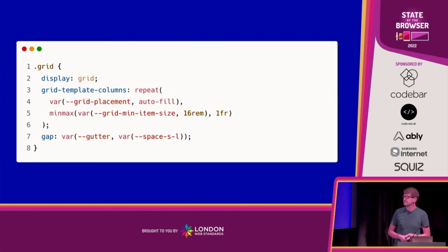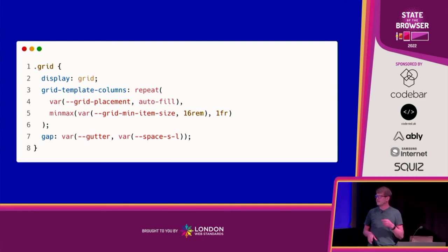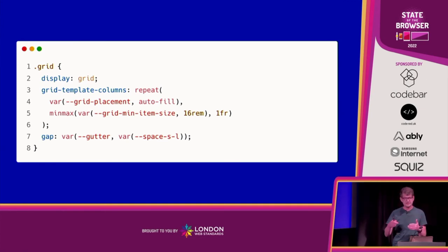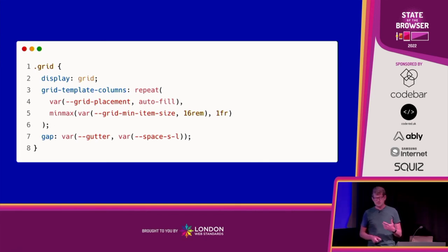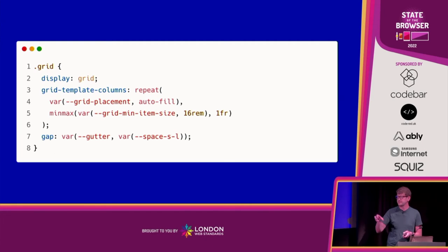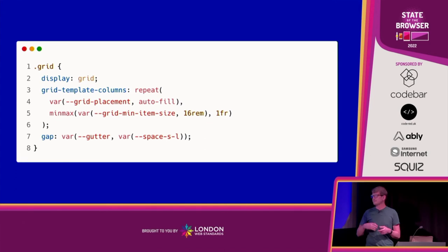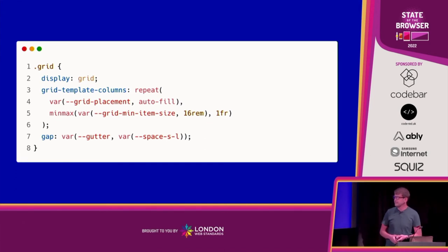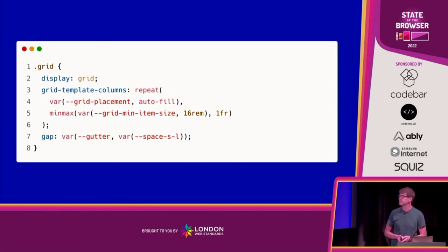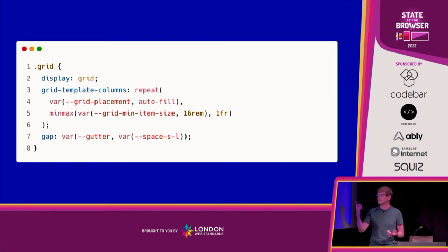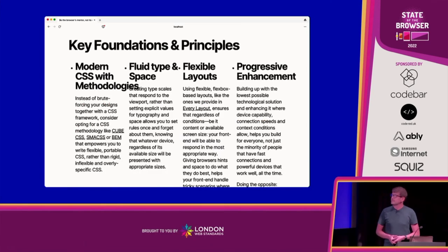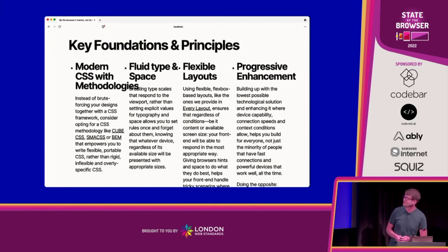You're probably thinking it's media query time, but it's not — we're going to use the browser's capabilities and give it a hint of how we want things to work. We'll use grid, and inside the grid column definition we use the `repeat` function with auto-fill as the fallback placement, and `minmax` — a bit like clamp without the middle part. We're looking for a custom property for minimum item size, defaulting to 16rem, and a maximum of 1fr.